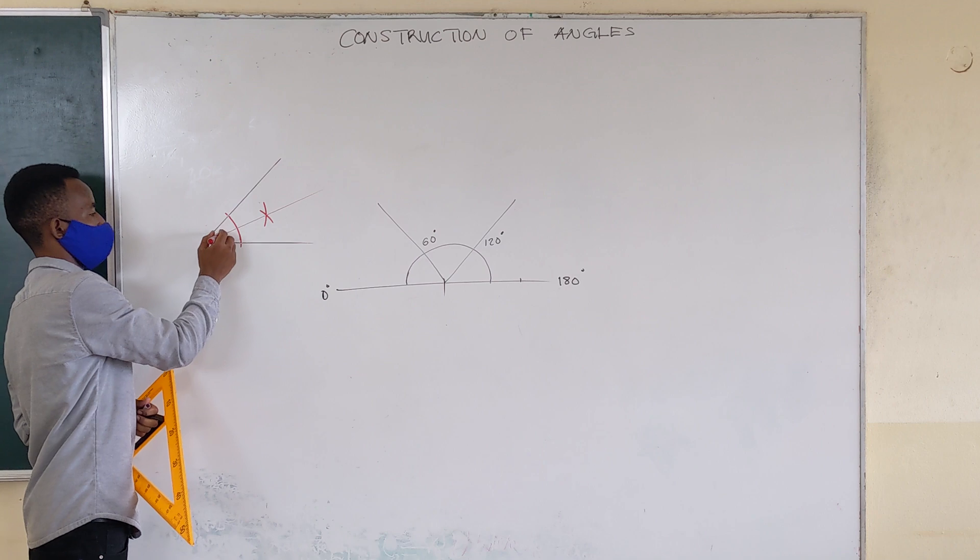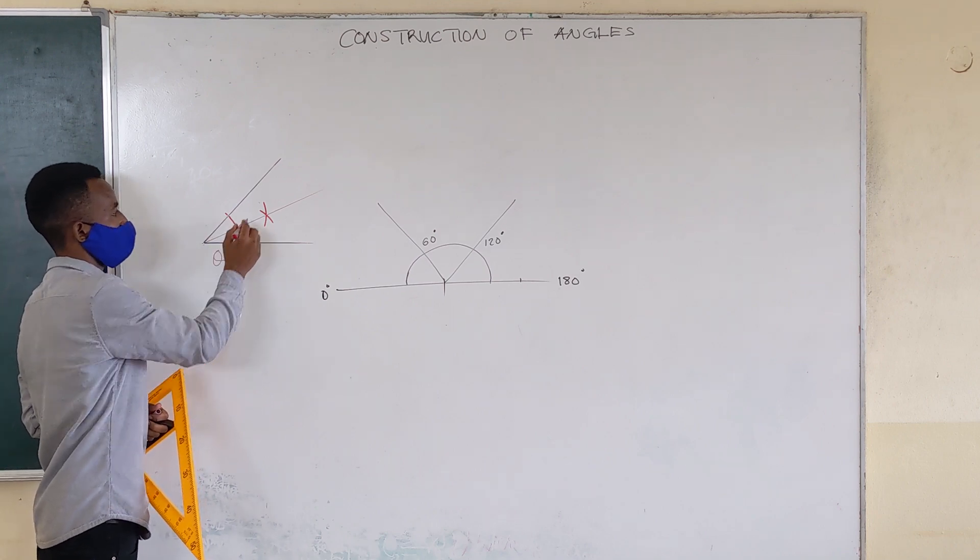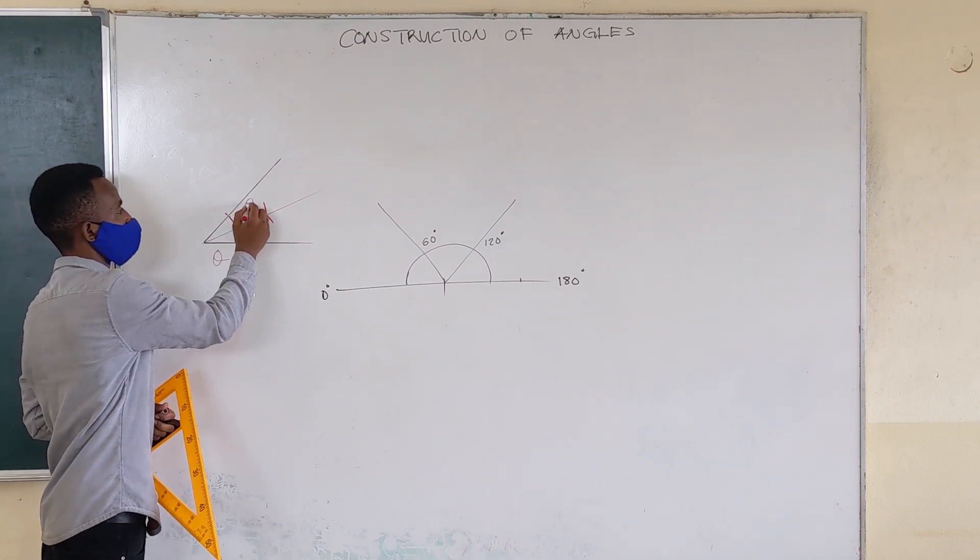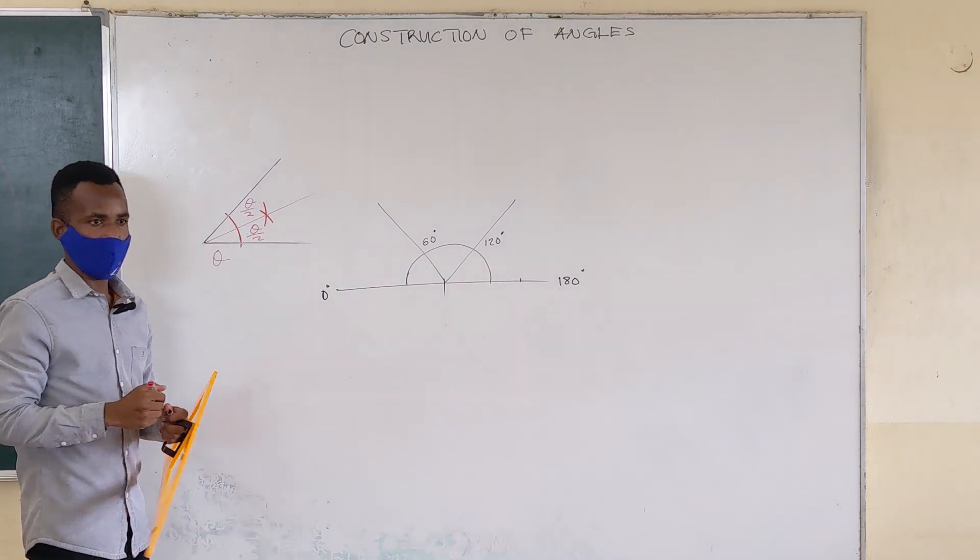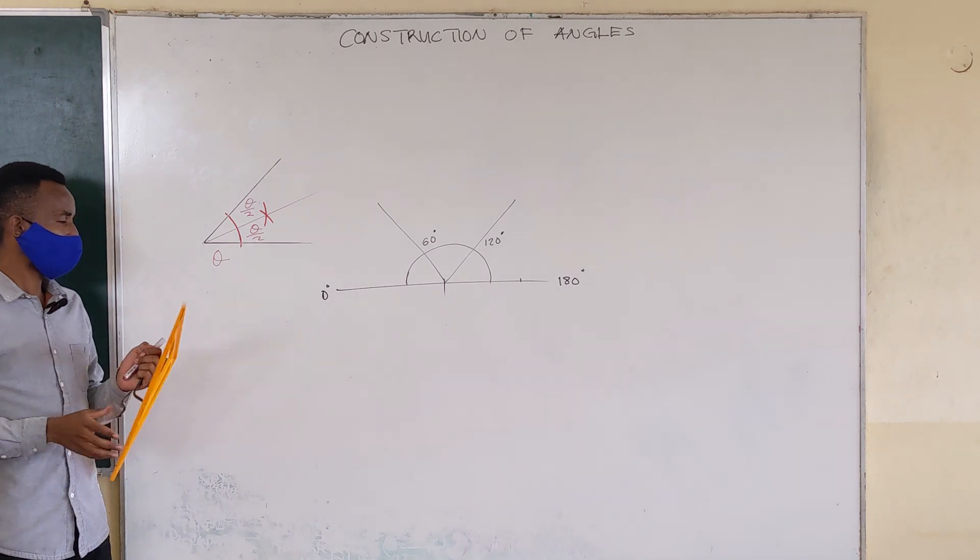So we're saying, if this angle here was angle theta, then what we have here would be theta over 2. Even here, theta over 2. And theta can be any angle.